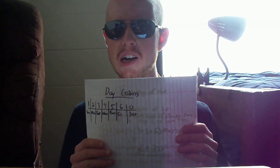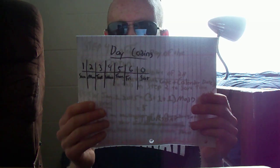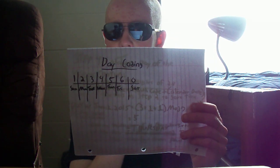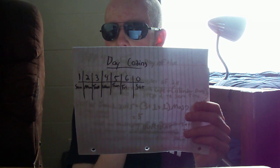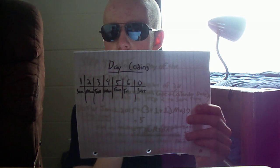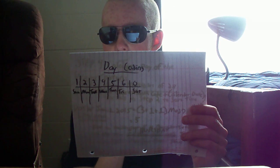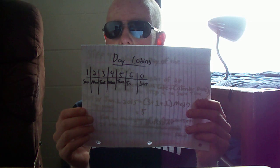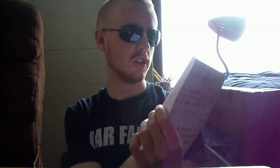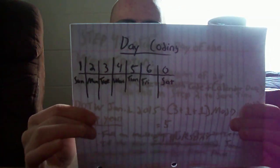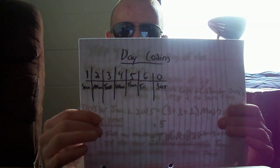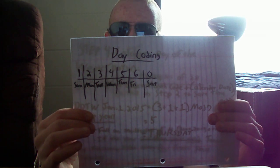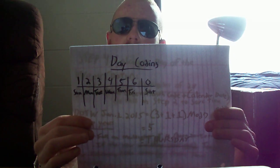This is something you have to know — something else you have to memorize, but there's a pattern, so this is easy. When you get the answer, it's going to be between zero and six, and that's going to be the day of the week. You have to know what each number means in the system: zero is Saturday, one is Sunday, two is Monday, three is Tuesday, four is Wednesday, five is Thursday, six is Friday.